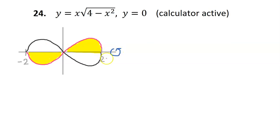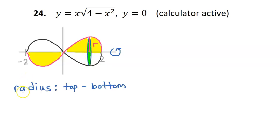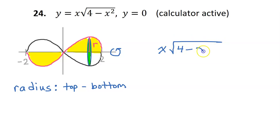If we rotate the region around the x-axis, we get this double solid like two balloons. We can calculate the volume of this solid by analyzing one slice of the solid, which is a disk. Step one of our three-step process is to come up with an expression for the radius of a single disk. When the radius is vertical, normally we subtract the top function minus the bottom function. But in this case, the bottom function is just 0, so the radius will just be x times the square root of 4 minus x squared.